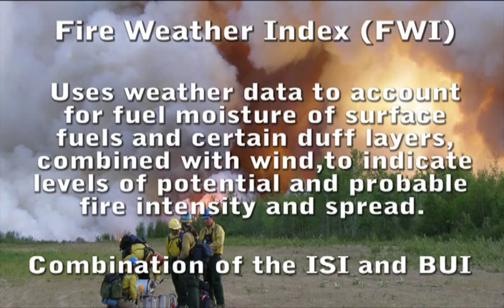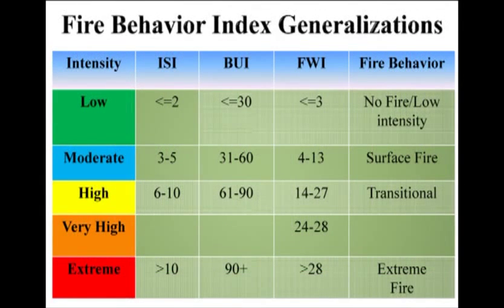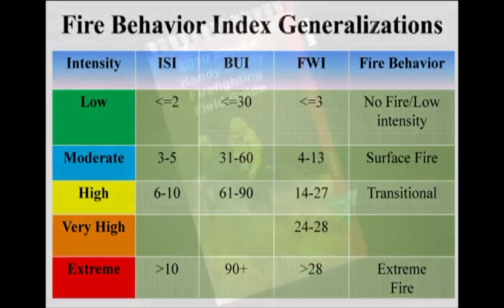These codes and indexes are interrelated, so in order to assess fire behavior and evaluate fire danger, all need to be taken into consideration. Here is a basic chart to help estimate fire potential and track the progression during any given fire season. Just remember that as the numbers increase, so does the fire danger. Several reference materials are available to you with information about CFFDRS, including the Alaska Handy-Dandy.